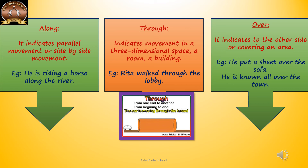The difference between 'along', 'through', and 'over': 'Along' indicates parallel or side-by-side movement — he is riding a horse along the river, showing the horse's movement parallel to the river's flow. 'Through' is used to show movement in a three-dimensional space like a room or building, from one end to another — Ritha walked through the lobby. 'Over' indicates to the other side or covering an area — he put a sheet over the sofa; he is known all over the town. We use 'over' to show covering or an area with no defined ending.